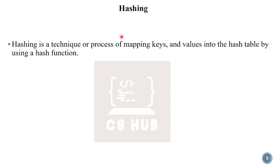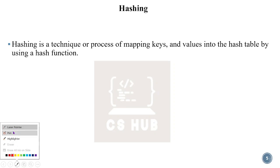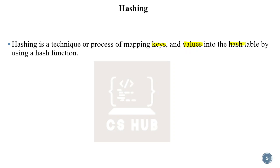In hashing, there is the concept of keys. Keys map to values in the correct location. It is a process of mapping keys and values into the hash table using a hash function. The two key terms here are keys and values, stored in a hash table using a hash function.